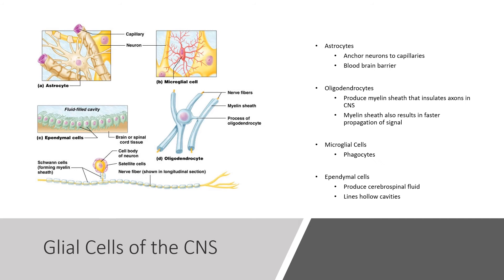Let's look at glial cells—the supporting cells found in both the central and peripheral nervous system. In the CNS, you have astrocytes, which anchor neurons to capillaries and form the blood-brain barrier. For example, when people use neti pots without heating the water, pouring liquid up the nose can bypass the blood-brain barrier, allowing a brain-eating amoeba to bypass those astrocytes—which never ends well. There are also oligodendrocytes, which produce myelin sheath to insulate axons of the central nervous system, resulting in faster propagation of a signal.